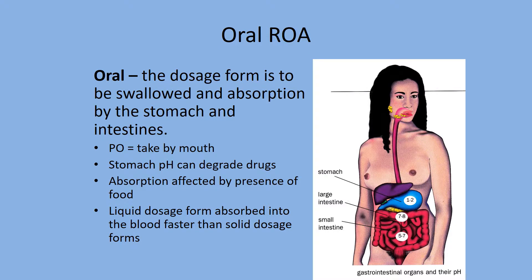Let's go into the routes. We'll cover PO first and then the dosage forms for the PO route. The pH in the GI system is very acidic in the stomach — about 1 or 2. As it goes into the small intestines, it starts to get neutralized — still a little acidic. Once it reaches the large intestines, it crosses over to become alkaline or base. Drugs in the stomach at that low pH may be broken down, or if food is in the way it may reduce absorption.